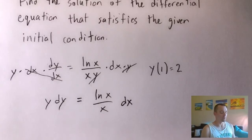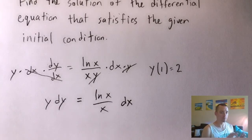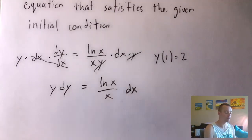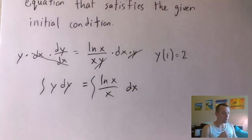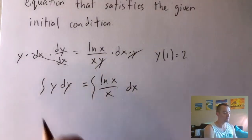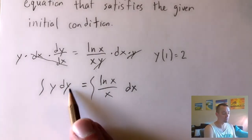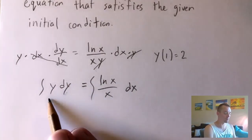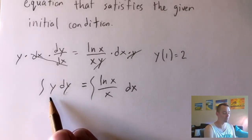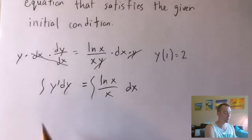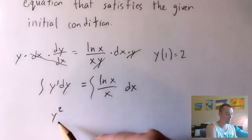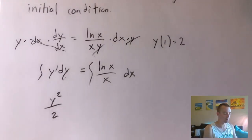Now that we've completely separated our x's with dx on one side and our y's with dy on the other, we can integrate both sides of our equation. The integral on the left side is fairly simple — since we have dy, we're integrating with respect to y. The integral of y with respect to y: using the power rule, treat it as y to the first power, raise the power by one, divide by the new power, giving y squared over 2.